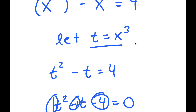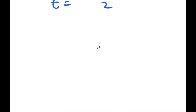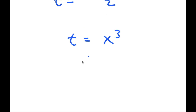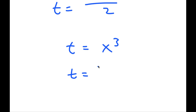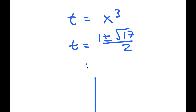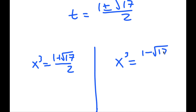Going back, recall that t is equal to x to the power of 3. So if t is equal to x to the power of 3, and t is also equal to 1 plus or minus the square root of 17 over 2, I get two equations: x to the power of 3 is equal to 1 plus the square root of 17 over 2, and x to the power of 3 is equal to 1 minus the square root of 17 over 2.